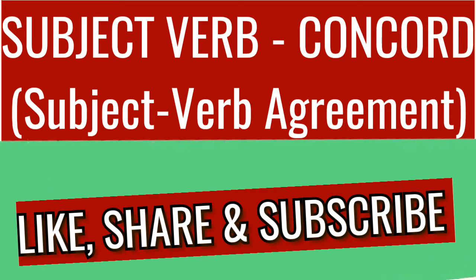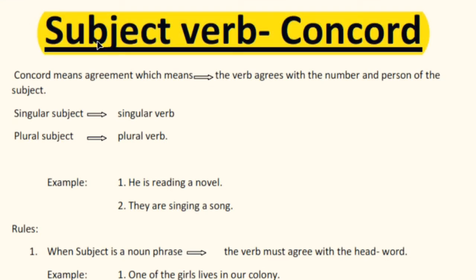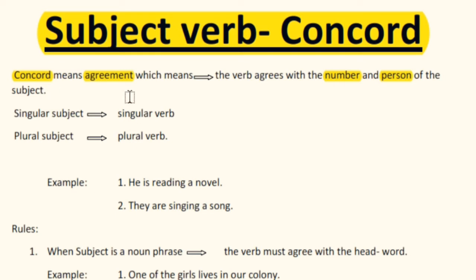Hello students. In this video I will talk about subject-verb concord. Concord means agreement, meaning the verb agrees with the number and person of the subject. It means a singular subject takes a singular verb, and a plural subject takes a plural verb.